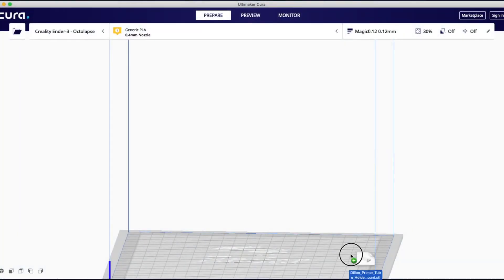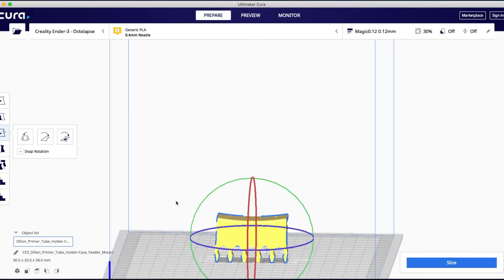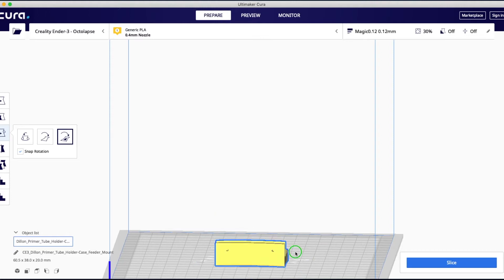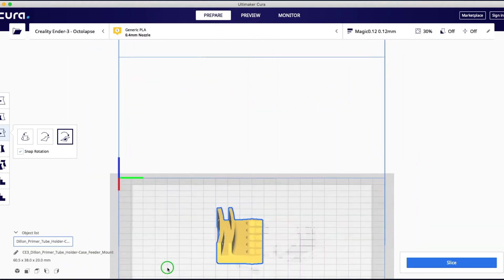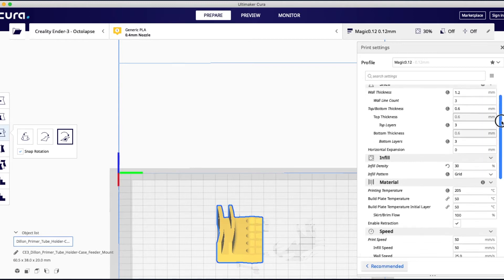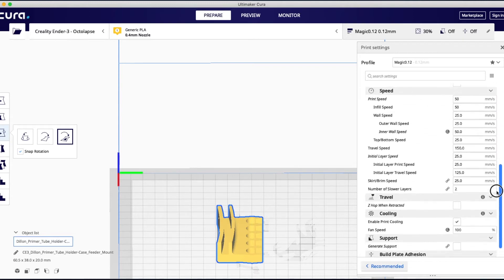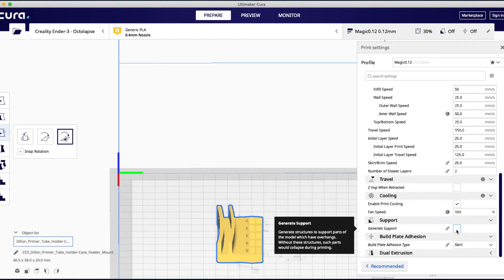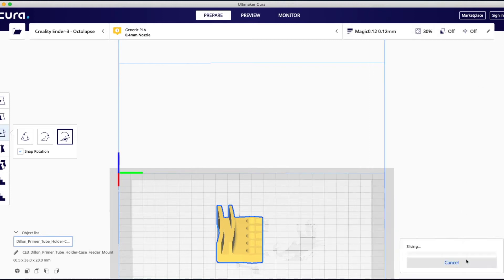I decided to print out E-Bob's solution first. I used Cura as my slicer so I imported his model into Cura and sliced it for printing. I'll need a 30% infill and I can print this without supports. It's going to take about 3 hours to print this.